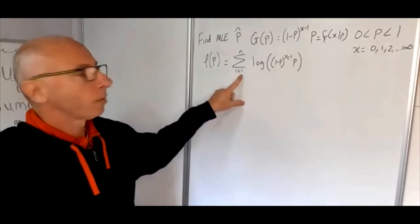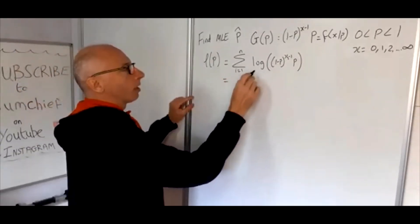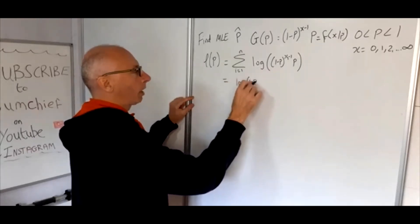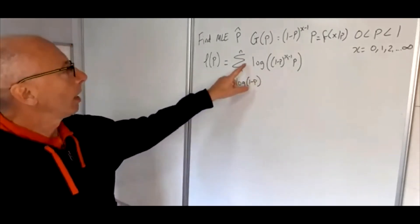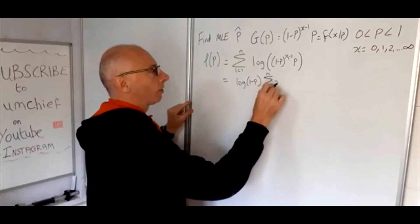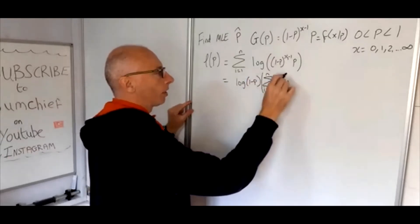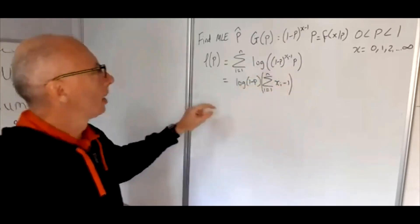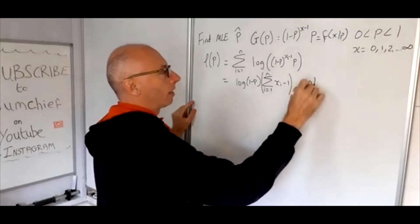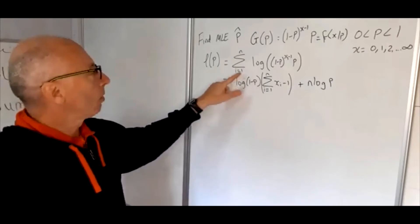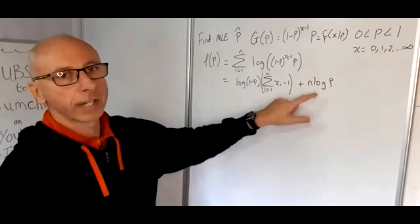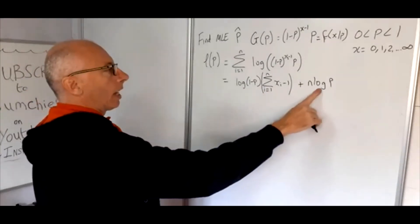Taking the log and not forgetting the summation term, we get: log of 1 minus P, multiplied by the summation from i equals 1 to n of X_i minus 1. Then we add n log P, because the log P term is summed n times and doesn't depend on i.